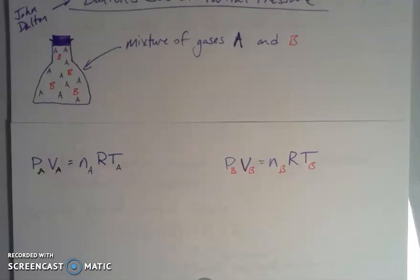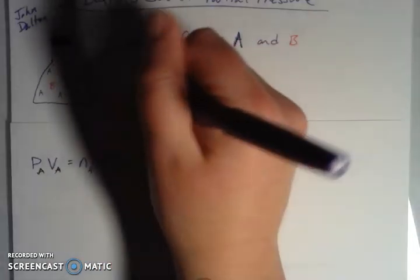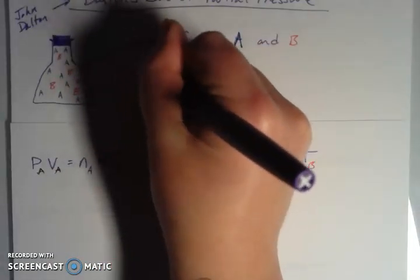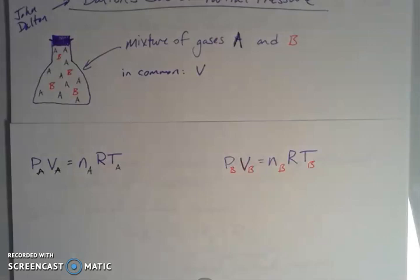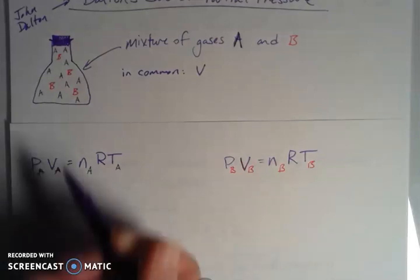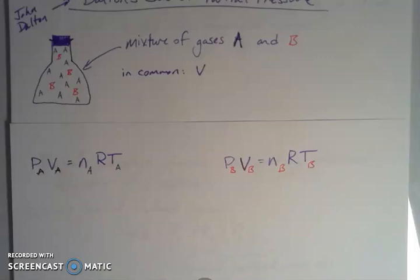So let's consider our system again. What are some things that this system has in common? So what would be in common for both A and B? So for gases A and B, we could say they're going to have the same volume if we're talking ideal gas, because V is just the volume of the container. So it doesn't matter that there's another gas in there. The amount of space that that gas takes up is going to be the volume of the container that it's in. So that means that V is going to be the same for both A and B.